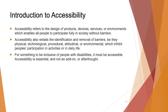Accessibility refers to the design of products, devices, services, or environments which enables all people to participate fully in society without barriers. Accessibility also entails the identification and removal of barriers — be they physical, technological, procedural, attitudinal, or environmental — which inhibit people's participation in activities or in daily life. For something to be inclusive of people with disabilities, it must be accessible. Accessibility is essential and not an add-on or afterthought.